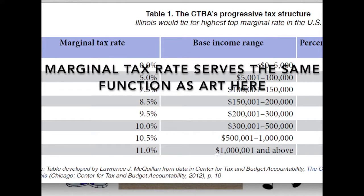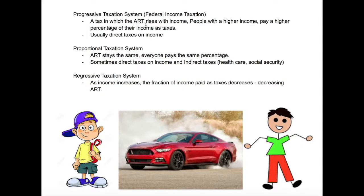An example of the progressive taxation system is the federal income tax if you live in the United States. This taxation system, since we've been speaking about income, is naturally usually a direct tax on income. Now our second taxation system — and it's the easiest to understand — is the proportional taxation system.